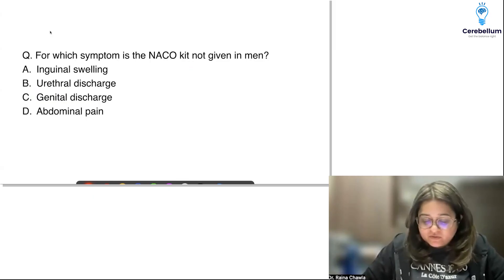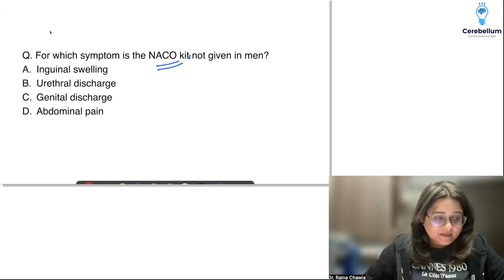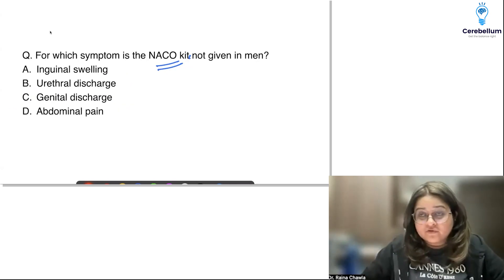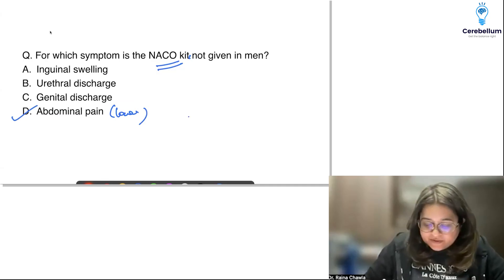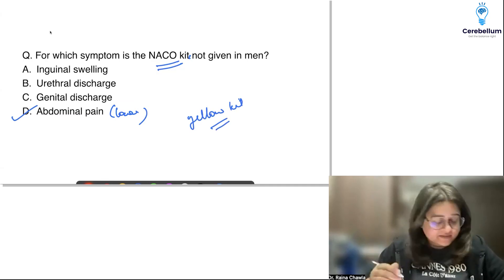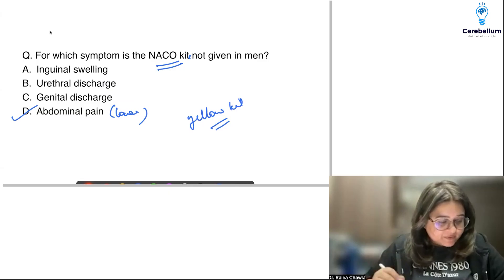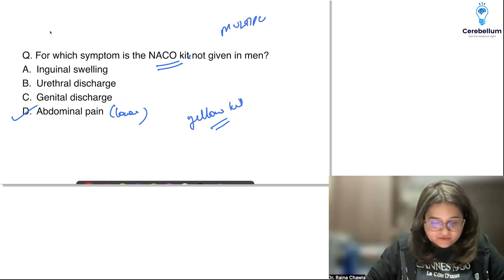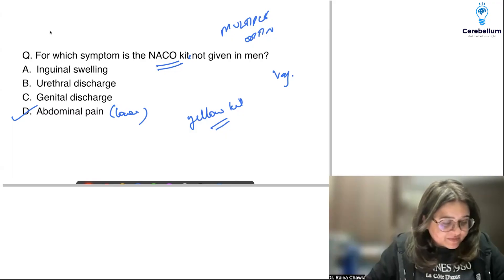There was a question on NACO kits. A list of symptoms was given, asking for which symptom the NACO kit is NOT given in men. Lower abdominal pain is a sign of PID, for which we give the yellow kit — given in women with PID, not a symptom for which we give a NACO kit in men. Vaginal discharge is also not applicable for men — for that we give the green kit. So the green kit and yellow kit are usually specific for women.